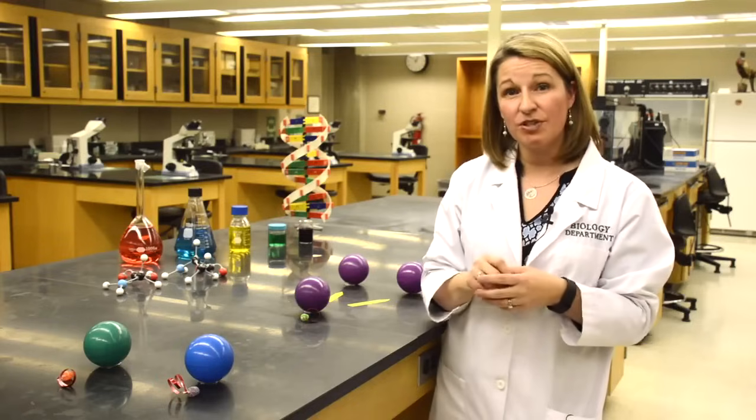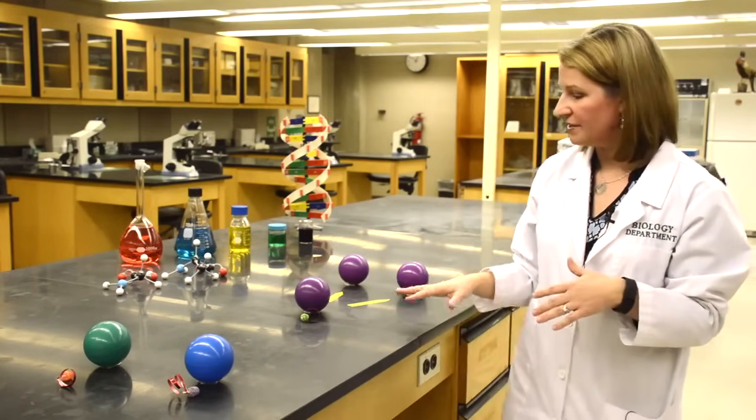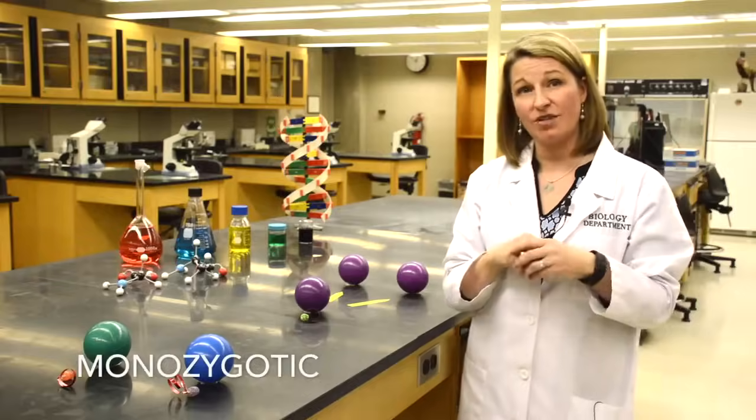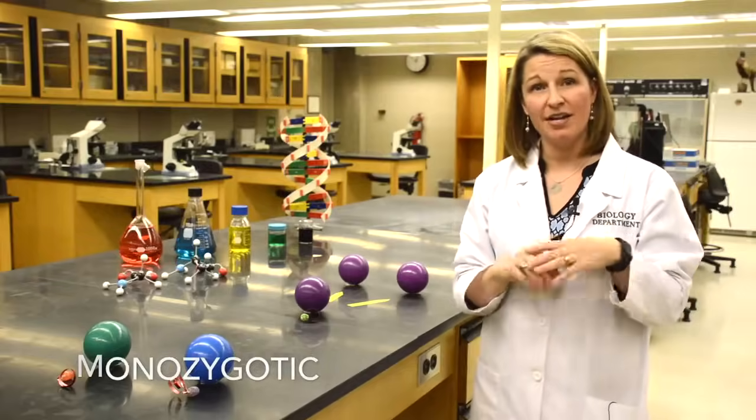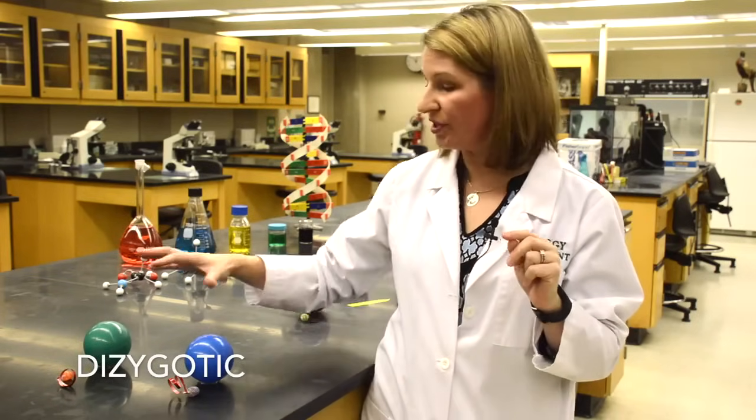So we're going to talk about the difference between identical and fraternal twins. With identical twins, they're called monozygotic. Monozygotic, mono meaning one, means that one zygote is formed. With fraternal twins, fraternal twins are dizygotic, di means two, so two individual zygotes are formed. So let's look at how that happens.